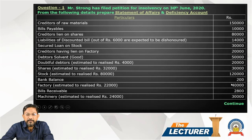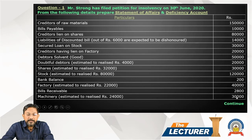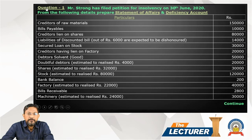We have 18,000 loss on the deficiency account. Bills receivable 2,800. Machinery 30,000, property 30,000, realized 24,000 — loss of 6,000 on the deficiency account.